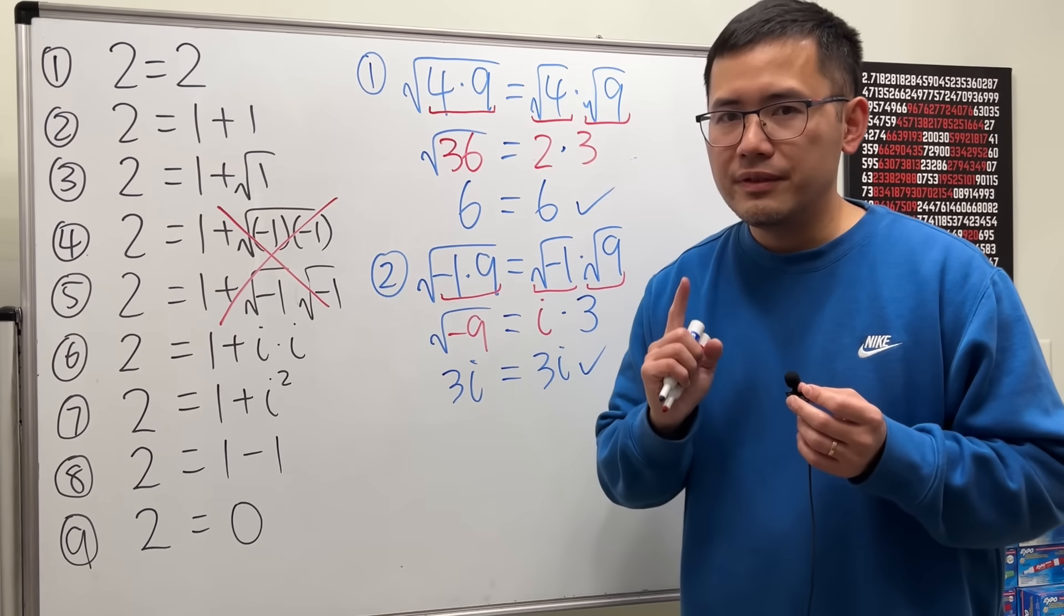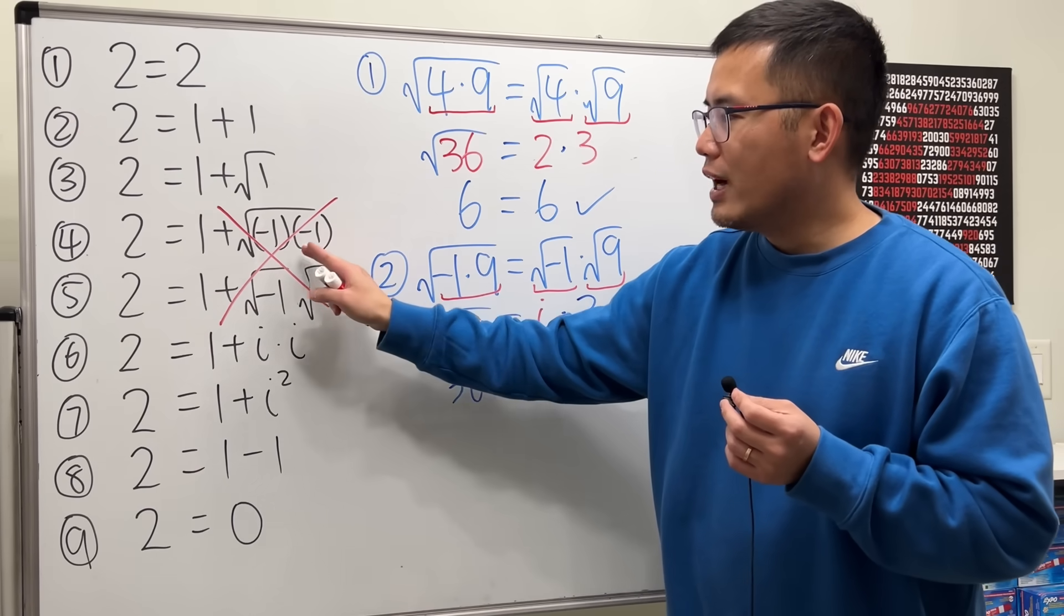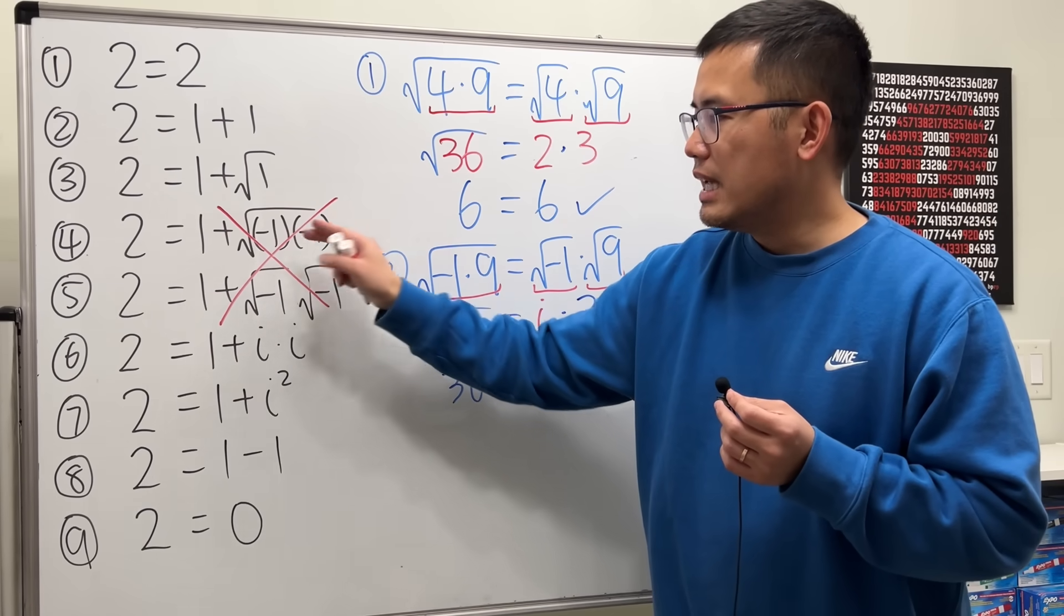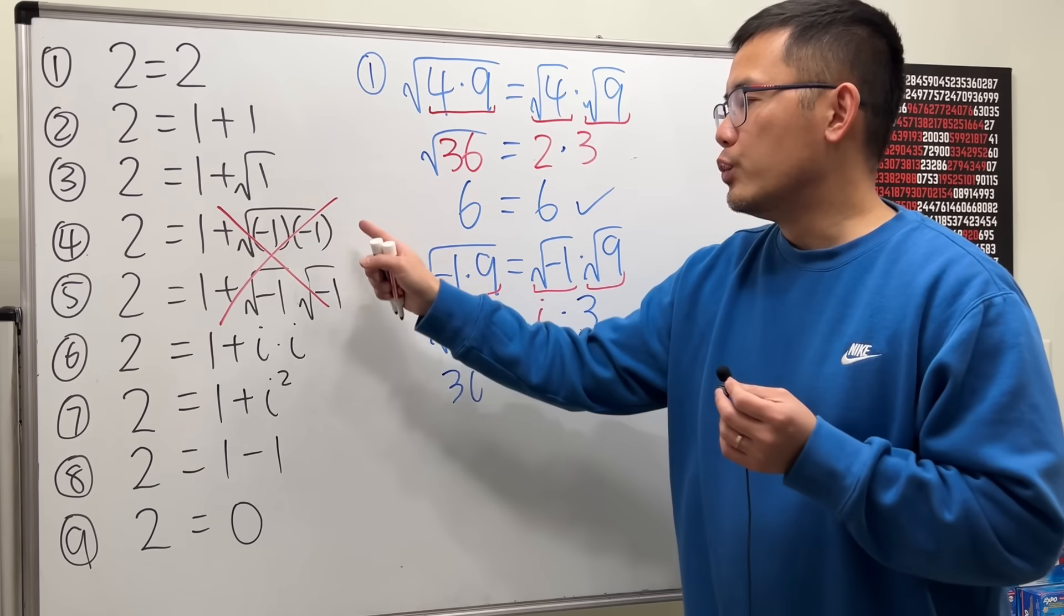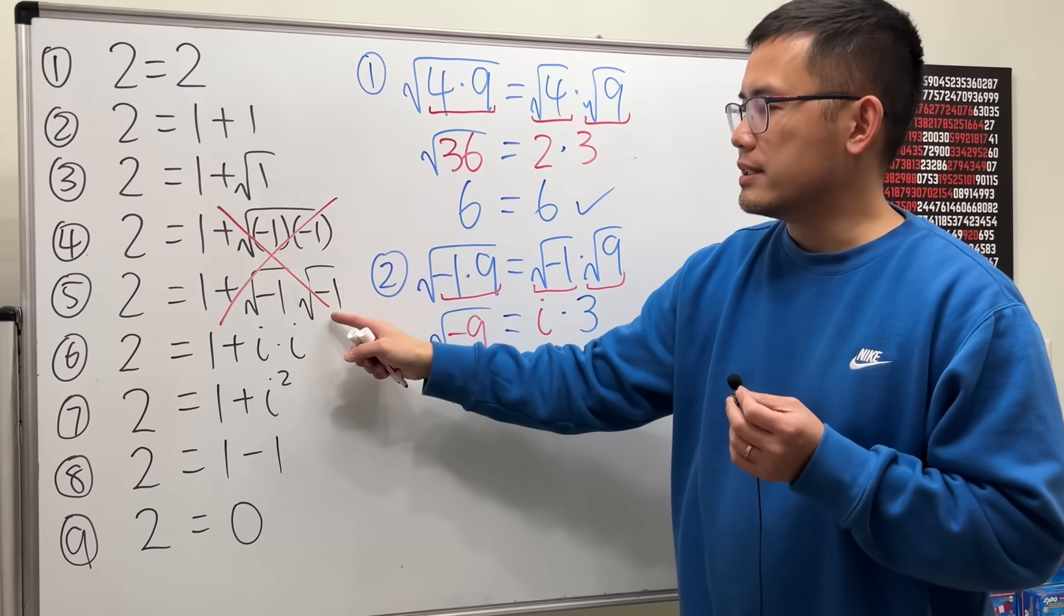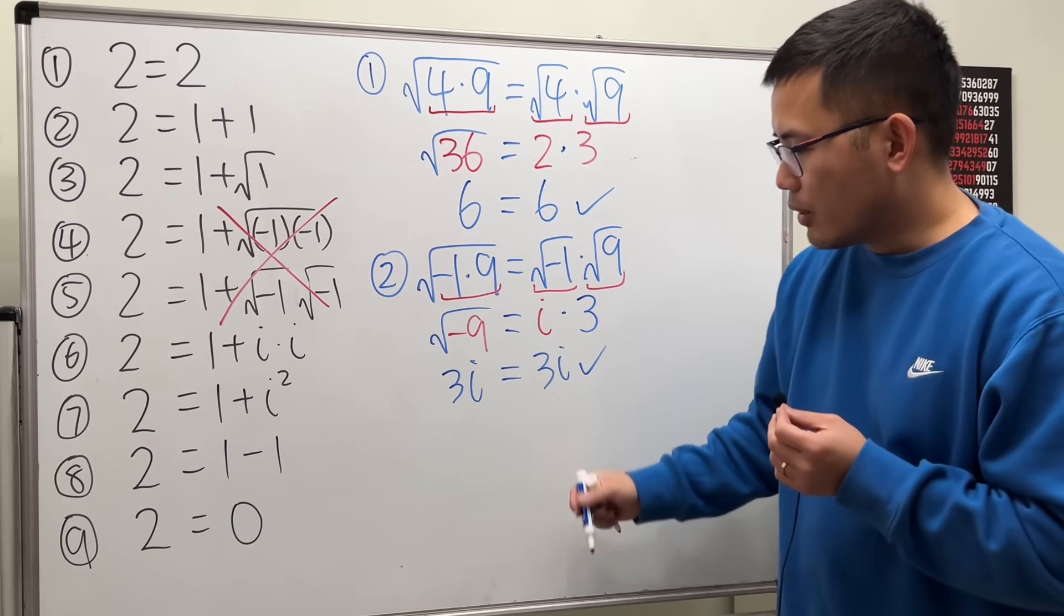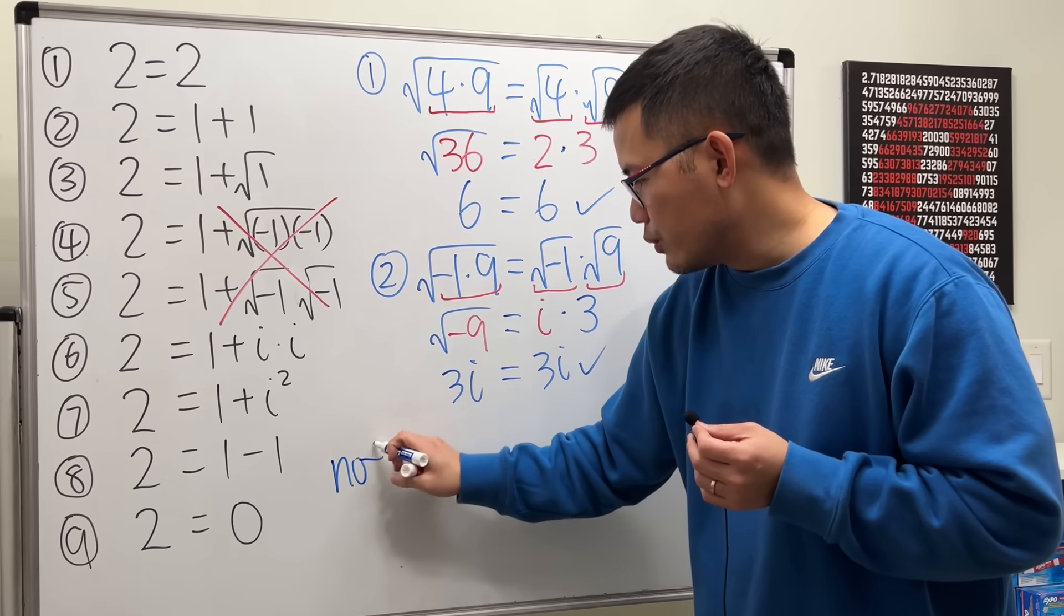But here is the deal. Notice how this and that, they are both negative numbers. In fact, when you have both negative numbers inside and they are multiplying, then in that case we are not allowed to separate the square roots and then multiply. So let me write that down right here for you guys.